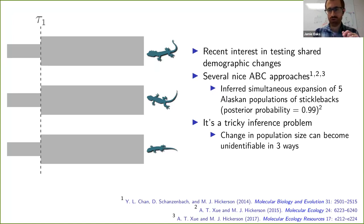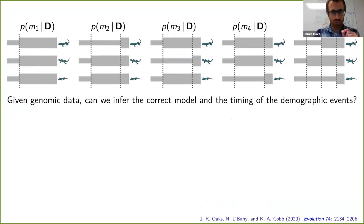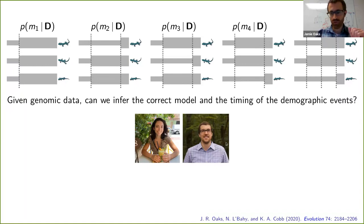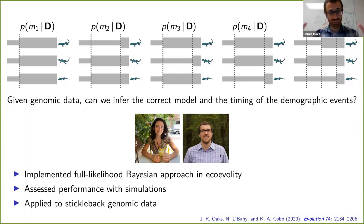ABC approaches seem to want to lump things together once again. So we wanted to do the same kind of inference for population size changes: from genomic data, can we estimate the timing of these changes and whether they are shared across populations? This was work done in collaboration with a summer REU student, Nadia Elbahi, funded off an NSF supplement, who was able to piggyback off the Comp Bio REU run by Les and others in the department. Kerry Cobb was also involved.